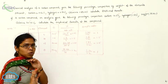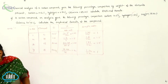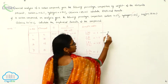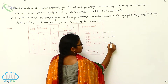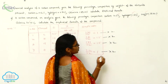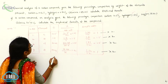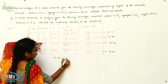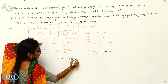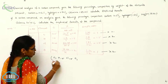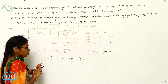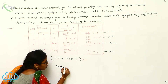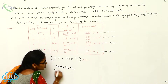In the empirical formula we should not use fractional values, so I will multiply everything by 2. That means: C becomes 1×2 = C2, H becomes 1.5×2 = H3, Cl becomes 1.5×2 = Cl3, and O becomes 1×2 = O2. So our empirical formula answer is C2H3Cl3O2.